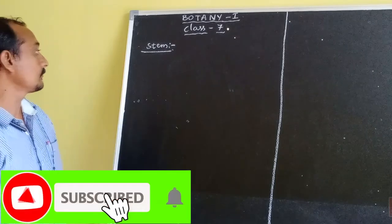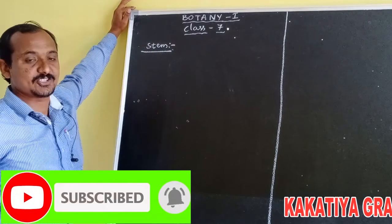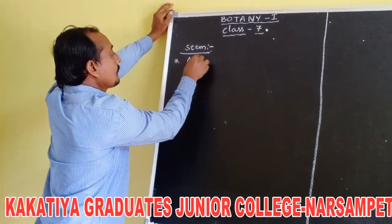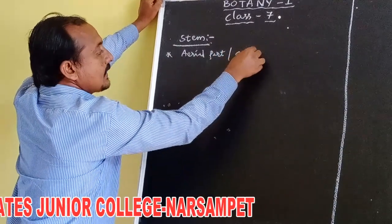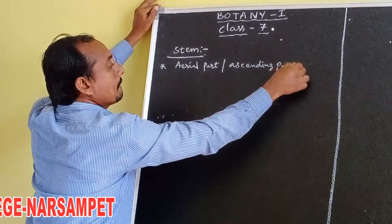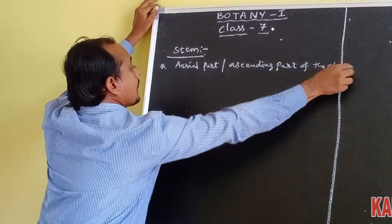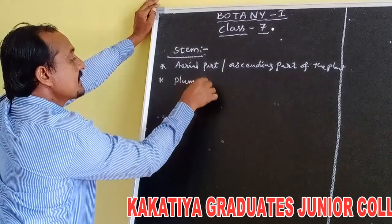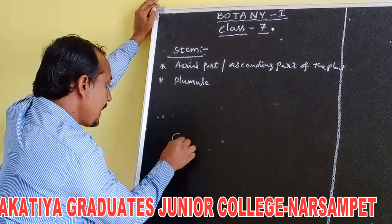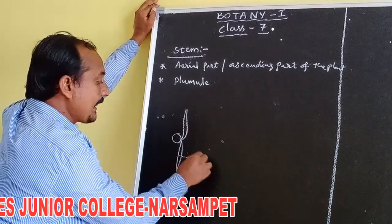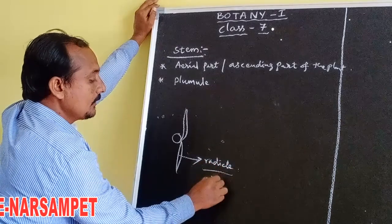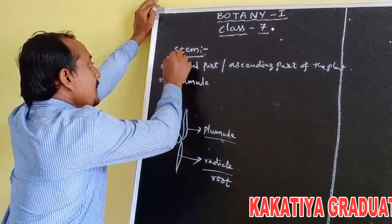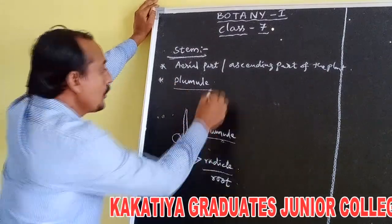Hi students, today I am discussing about the topic STEM. STEM means it is the aerial or ascending part of the plant and it develops from the plumule. At the time of seed germination, the seed produces two structures: radicle and plumule. Radicle grows into the soil and develops into root, and plumule grows above the soil and develops into shoot or stem. Hence, it develops from the plumule of the embryo.